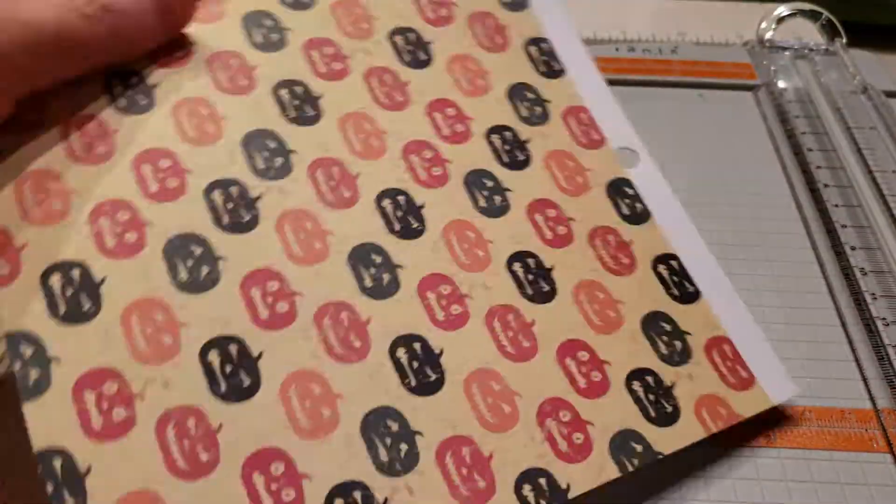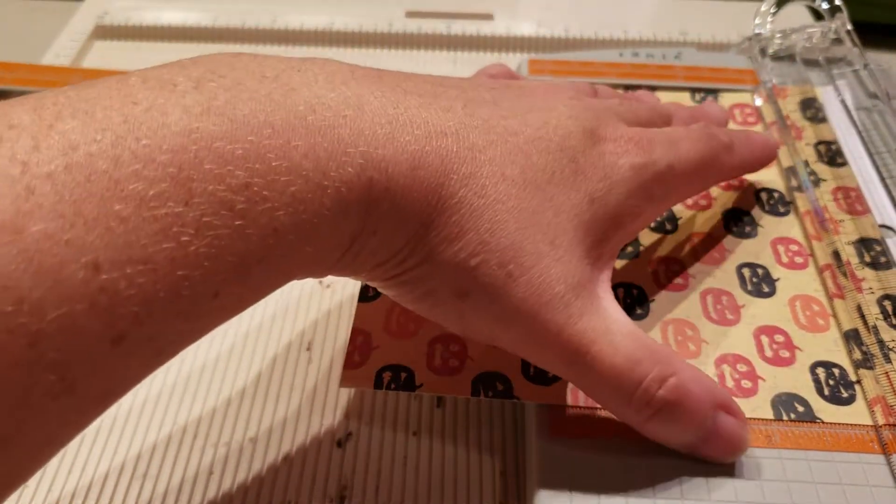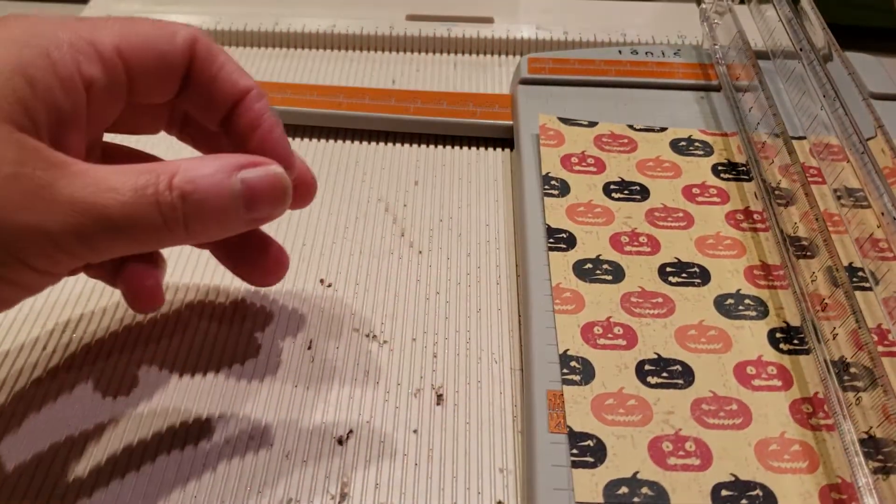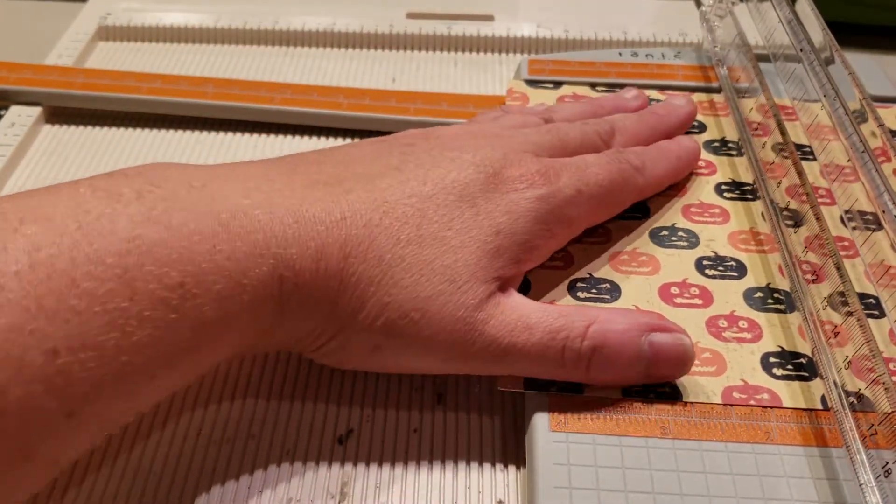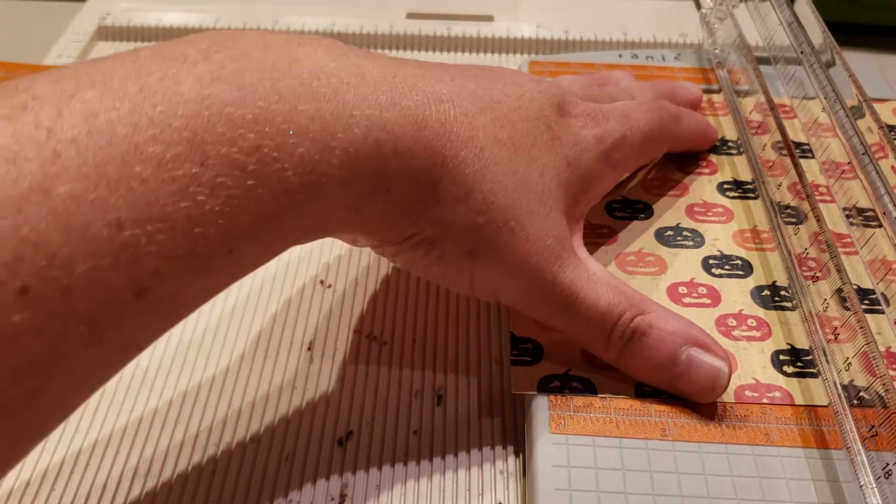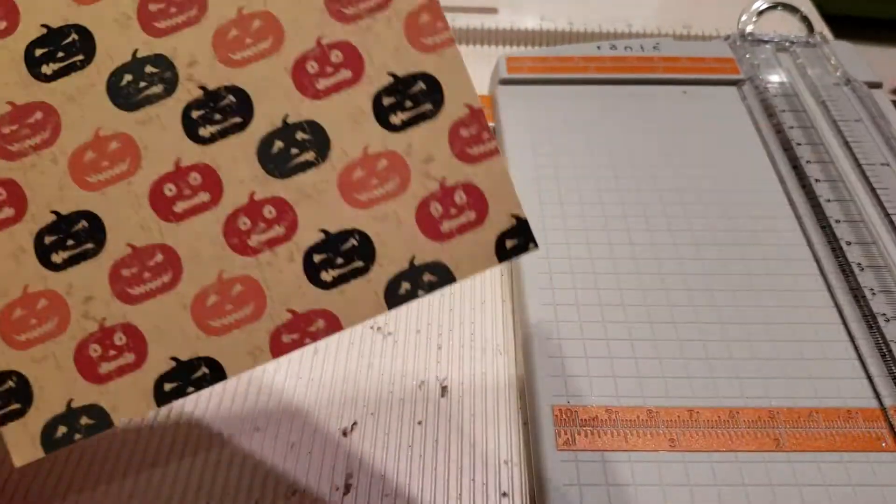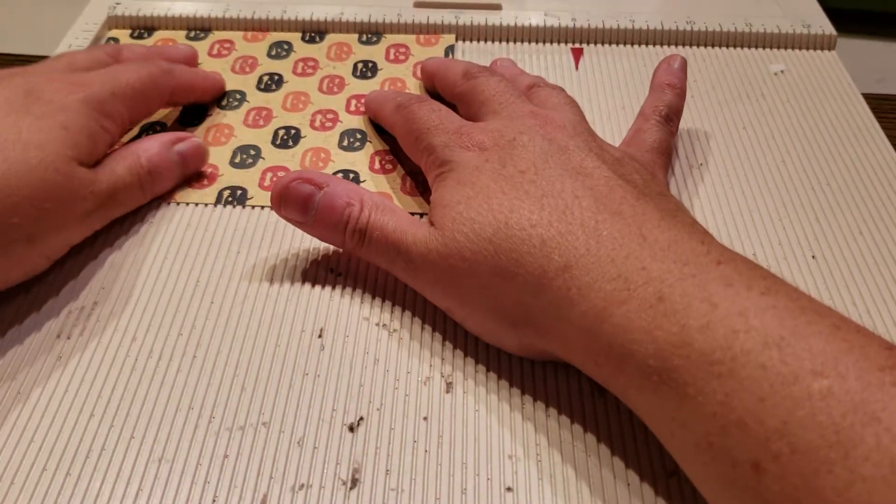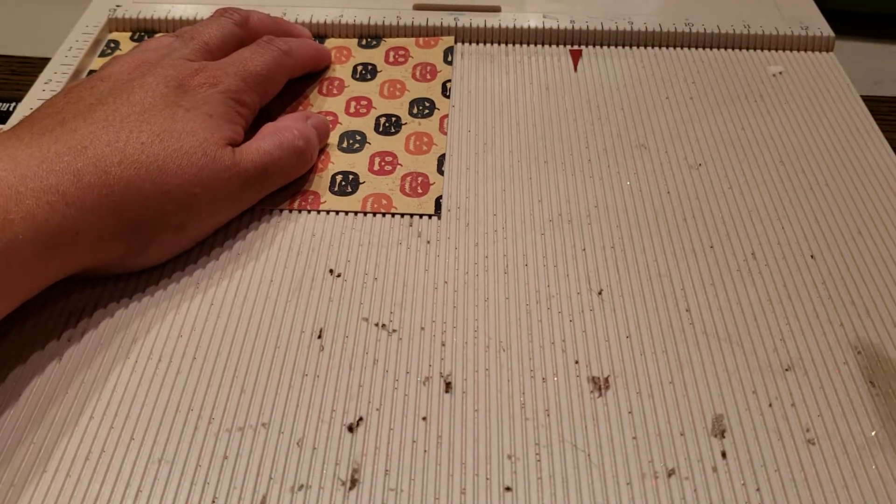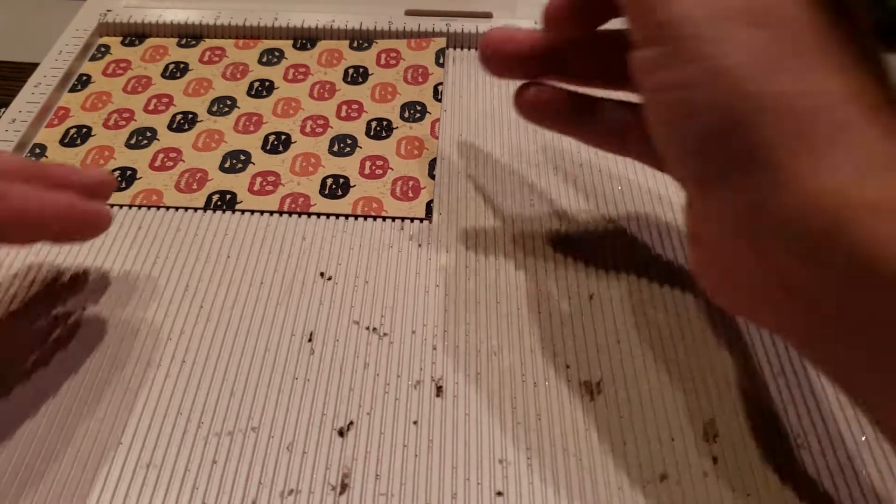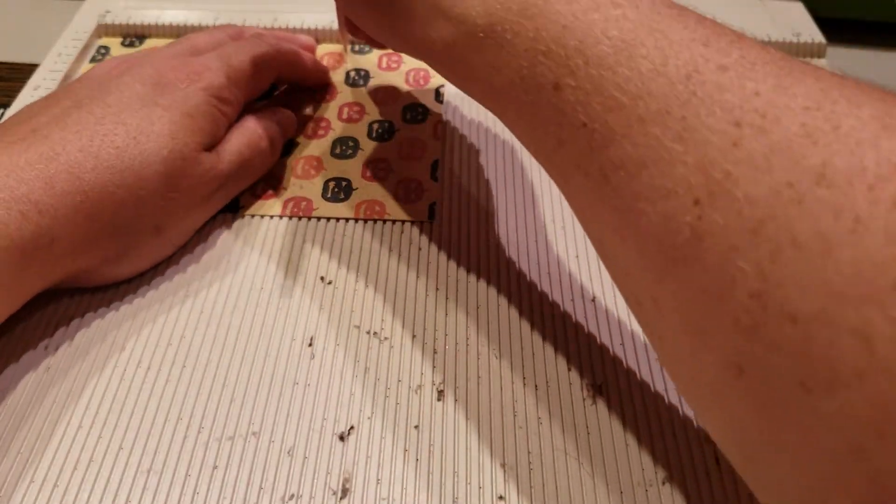So take whatever paper you're working with. I am doing a Halloween theme so I'm going to stay with that. Cut off the edge here. So I want to cut this just a little bit under four and three fourths and I actually want to leave it at the six mark. Then I am going to take this and score it at a little bit like four and one-fourth mark is really what you want to score.